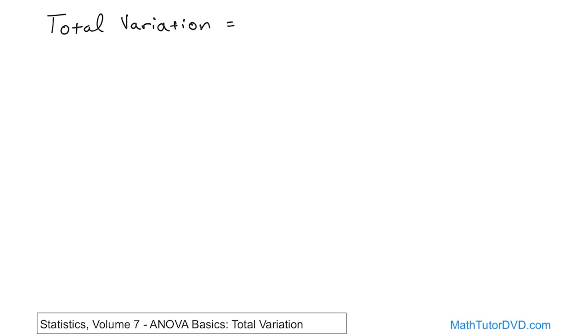It's basically equal to the sum of squares of errors (SSE) that we calculated in the last section, plus the sum of squares among treatments (SST) that we calculated a few lessons ago. So you see, total variation is nothing more than the sum of these two things that we've been learning about. So this guy is the sum of squares of errors, and this is the sum of squares among treatments. So it's the two types of variation that we've been studying so far. When you add them together, you get the total variation.